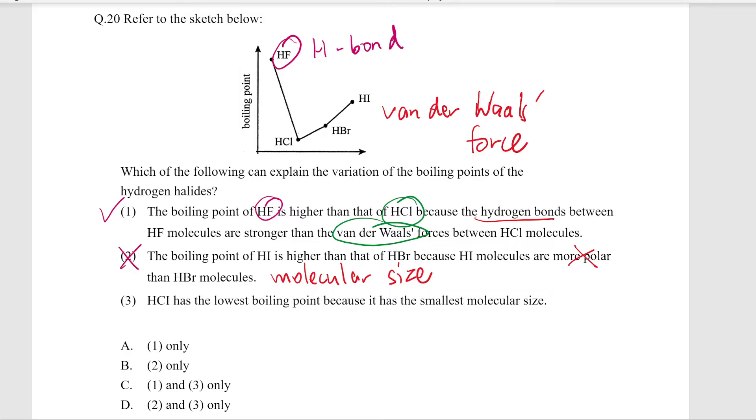Option two is wrong. The last option: HCl has the lowest boiling point because it has the smallest molecular size. Among these three, that would make sense because it's having the lowest boiling point. You can see that among group seven hydrogen halides, among these three, it is the smallest.